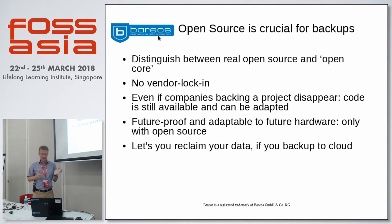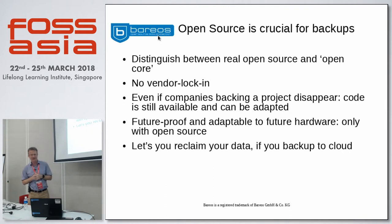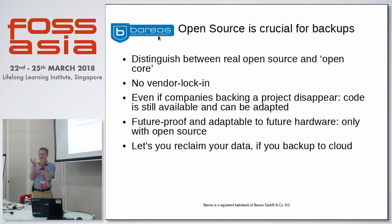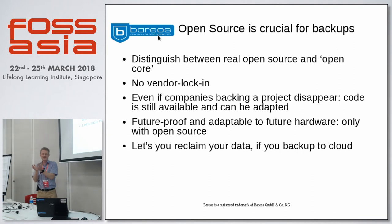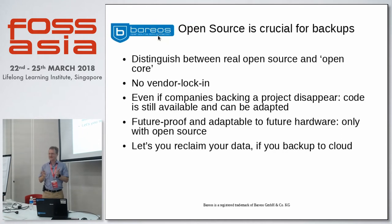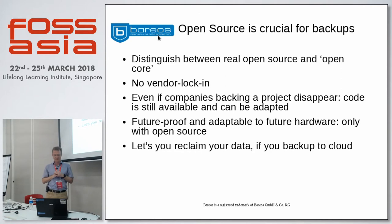That's why open source is crucial for backups. We have to distinguish between real open source — completely open source — and things that call themselves 'open core.' Open core means some portion is open source and something around it is not. This kind of software combines the disadvantages of both open source and proprietary source. It's nothing better than proprietary software when it comes to vendor lock-in and future usability. Only real open source eliminates vendor lock-in. Even if the company behind a project disappears, the code is available and can be adapted. The worst that can happen is you have to pay someone to continue development.